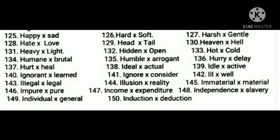Okay children, in total we have 101 to 150 opposites for annual revision. Today we discussed 125 to 150 — total you can learn all of them. Okay children, bye. Thank you.